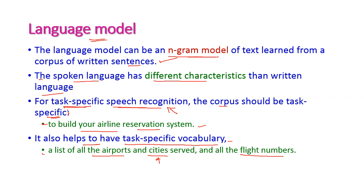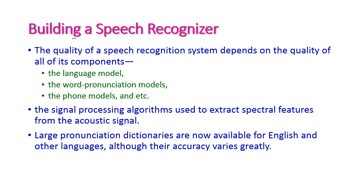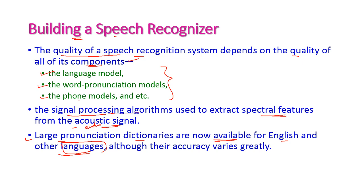Building a speech recognition system: the quality of the system depends on the quality of its components — the language model, word pronunciation model, and phone model. The signal processing algorithm used to extract spectral features from the acoustic signal also matters. Large pronunciation dictionaries are now available not only for English but also for most popular languages, and their accuracy varies greatly.